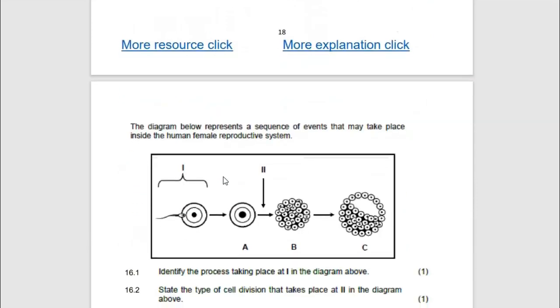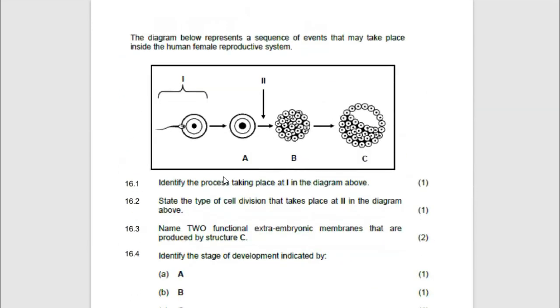So then, the process I was trying to explain is here. The diagram probably represents a sequence of events that may take place inside the human female reproductive system. Identify the process taking place. Zygote form a ball of cells which we call morula. So diagram one, you see a sperm fusing with the ovum, you find a form. There is a zygote. So the process is fertilization.